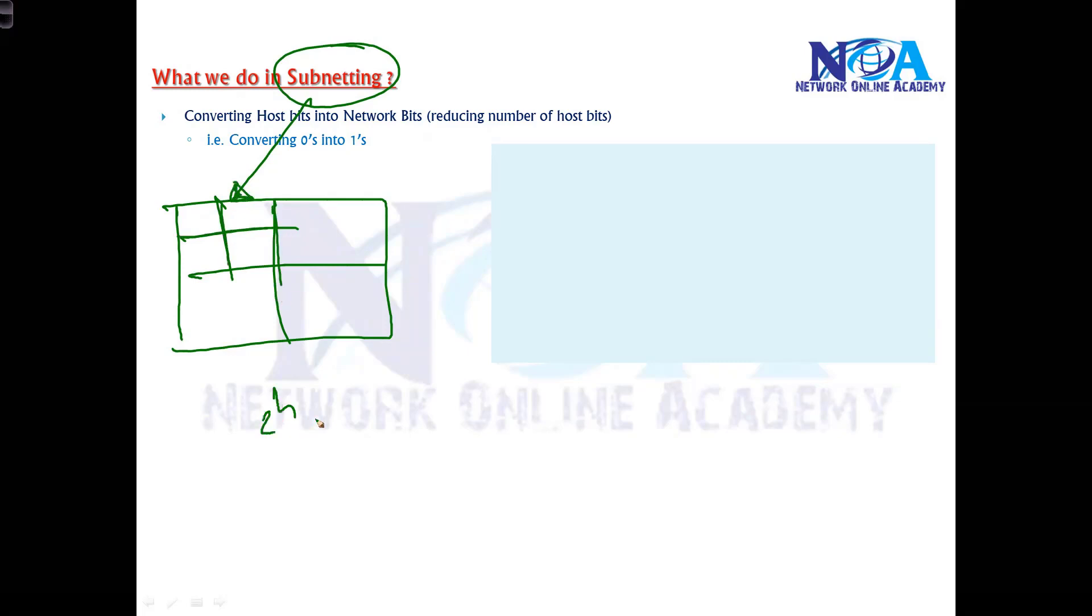We do that based on 2 to the power of H value. But the question is what exactly happens at the end user side and how we are going to identify whether it is the subnets or the default networks. Simply, it's based on converting the network host bits into network bits. In subnetting, we just decide how many network bits we want to use and how many host bits we want to use.